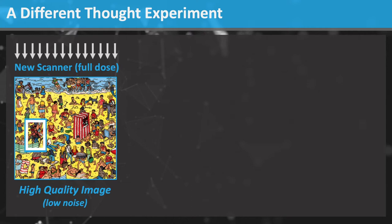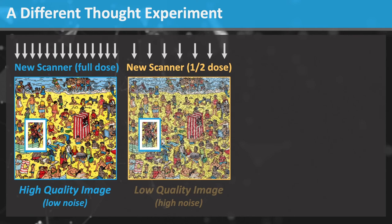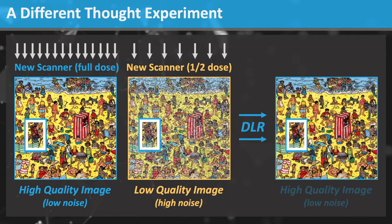Why not scan with half the radiation dose? If you did that on your newest scanner, you would get low quality images with high noise, even with iterative reconstruction. But you could use DLR to reduce the noise and regain the high image quality. It would be easy to see the appendicitis, and this pediatric patient was exposed to half the amount of radiation.